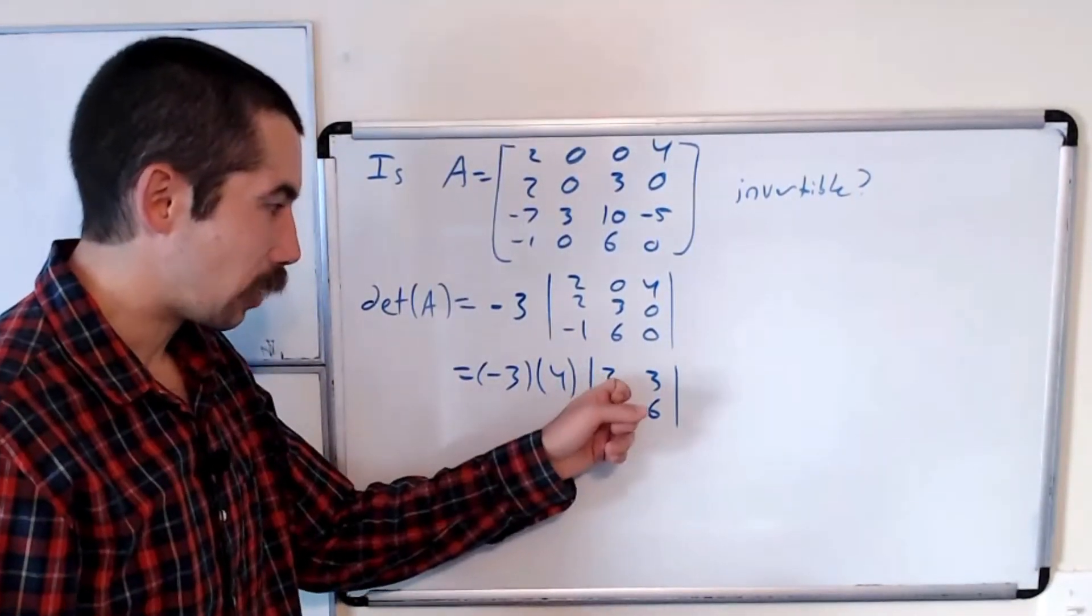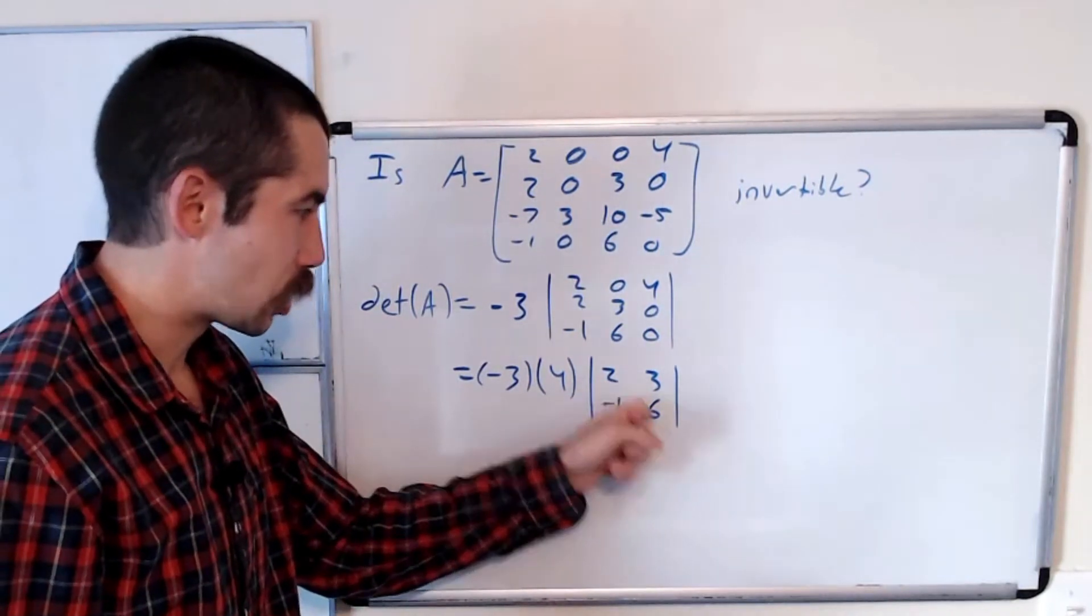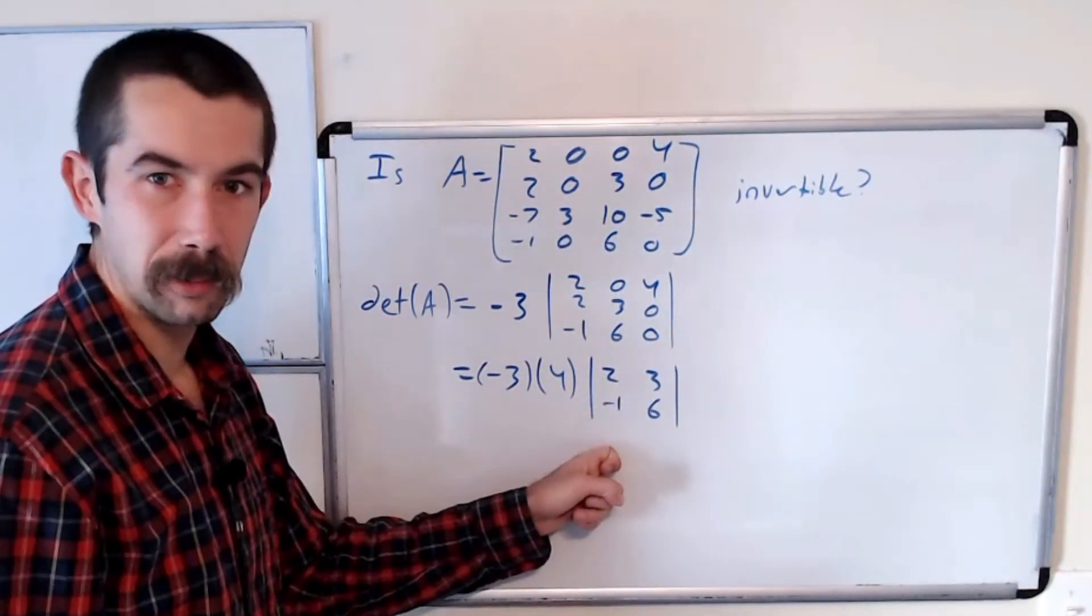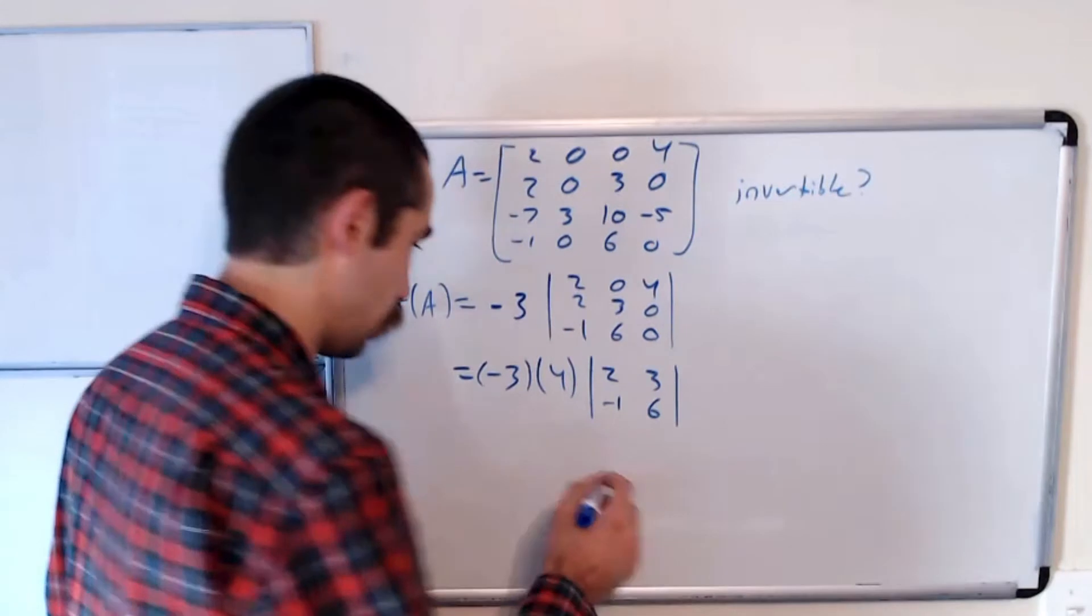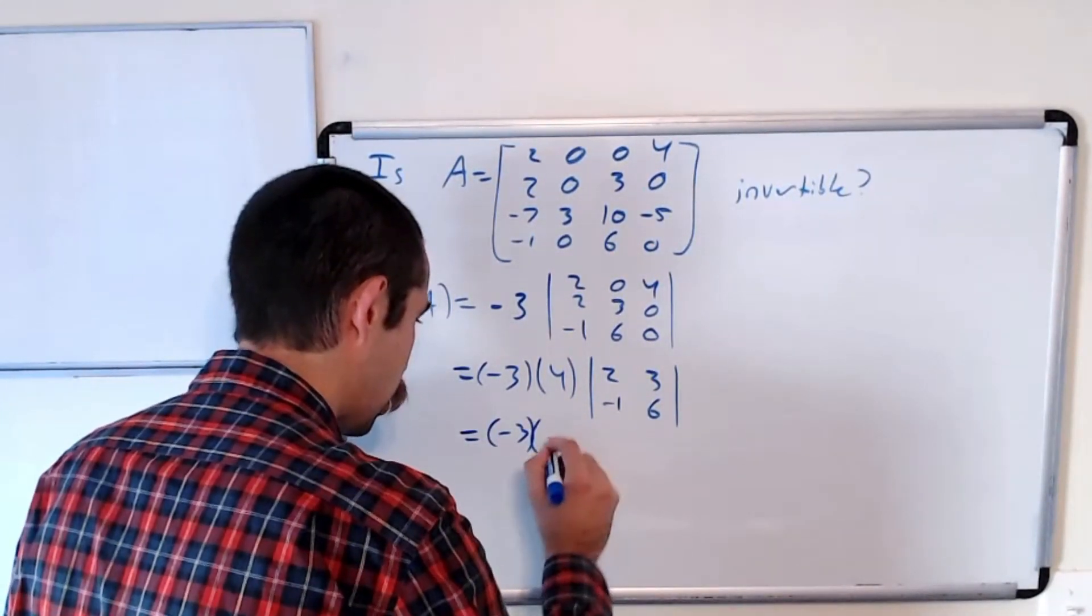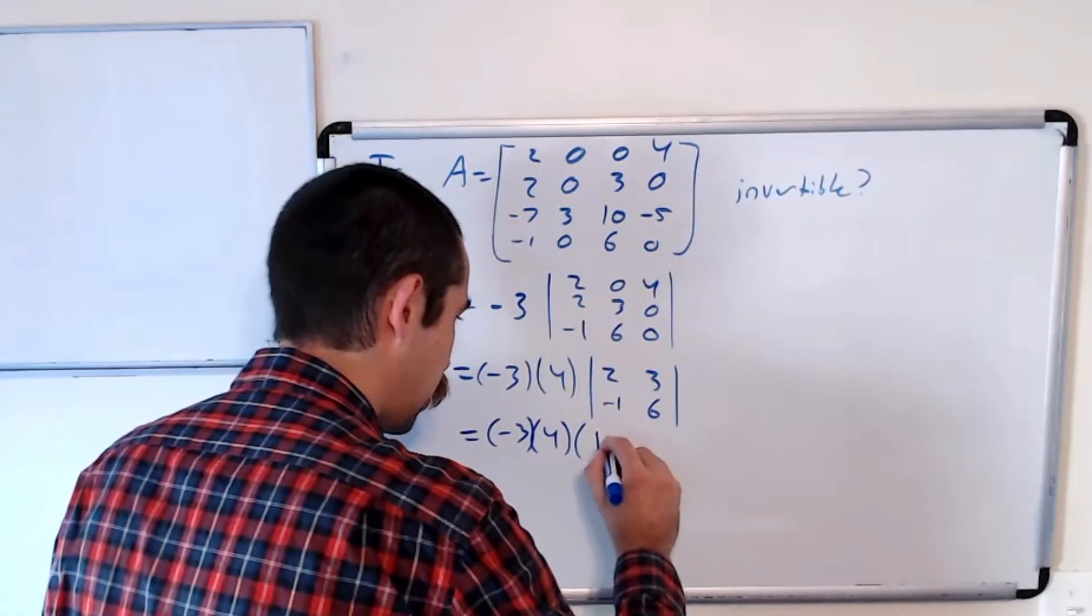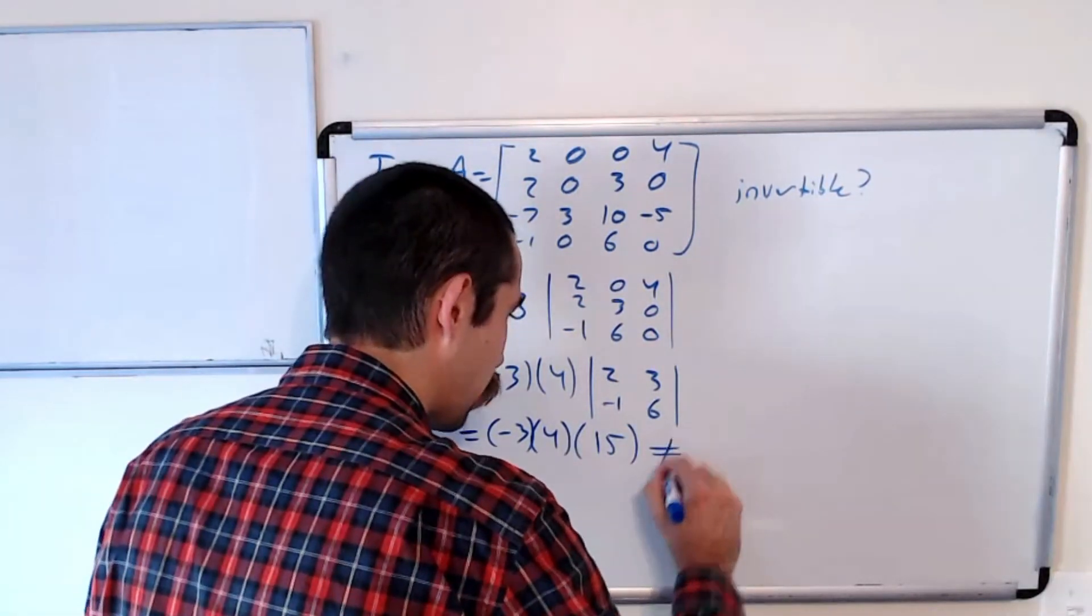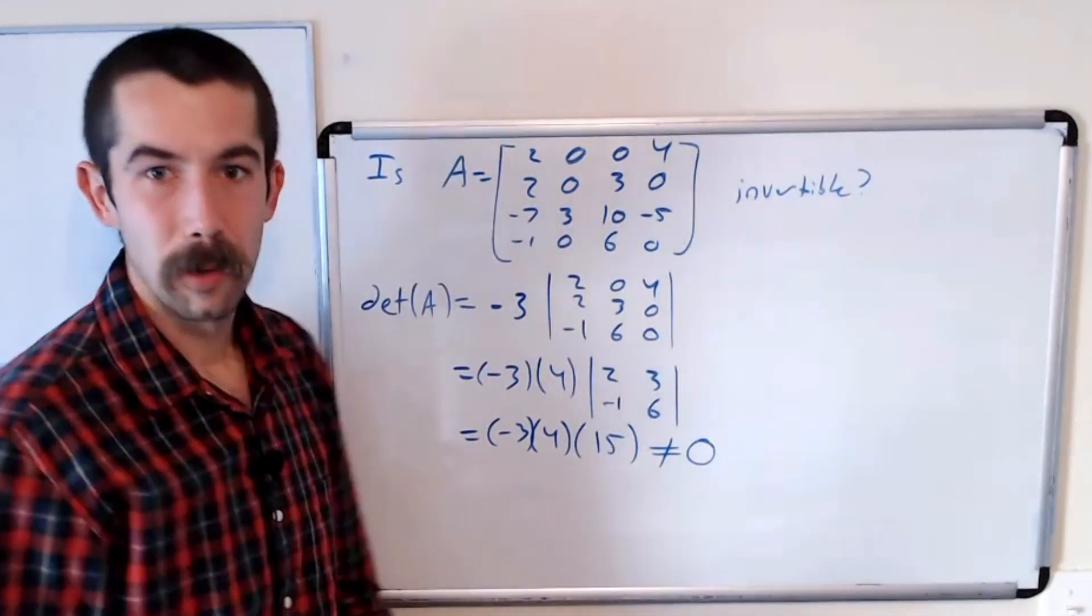Okay, and now let's compute this determinant. This is 12 minus negative three, which is 15. So the determinant of A is negative three times four times 15. We don't really care what this value is, except it's not zero.